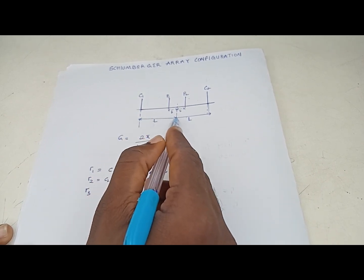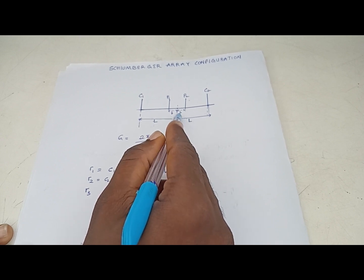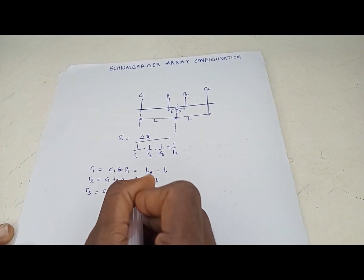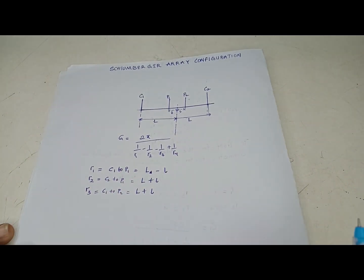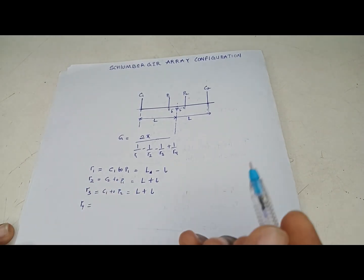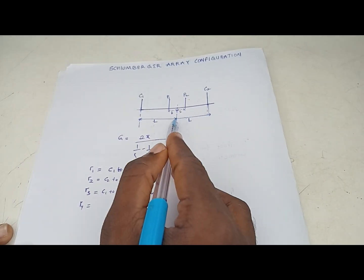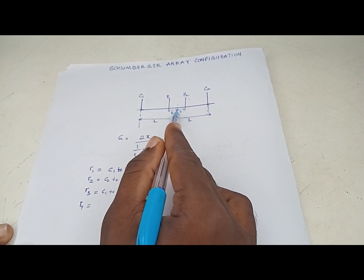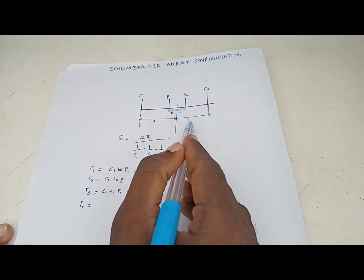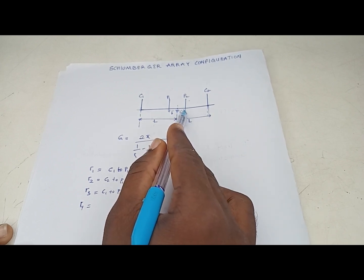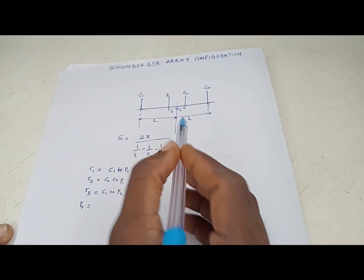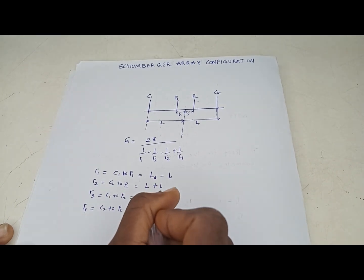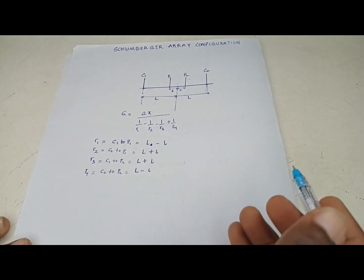For r3, the distance from C1 to P2, we get capital L plus small l. So r3 = L + l. For r4, the distance from C2 to P2: C2 to the midpoint is capital L, and we remove small l to reach P2, so r4 = L - l.